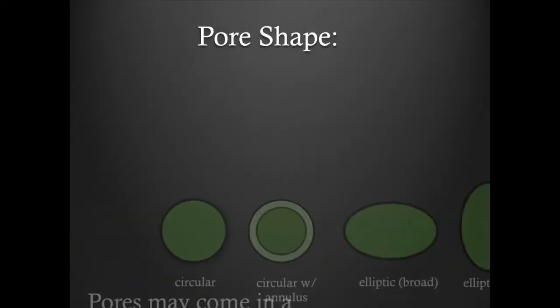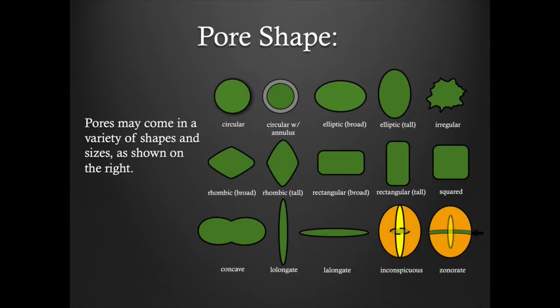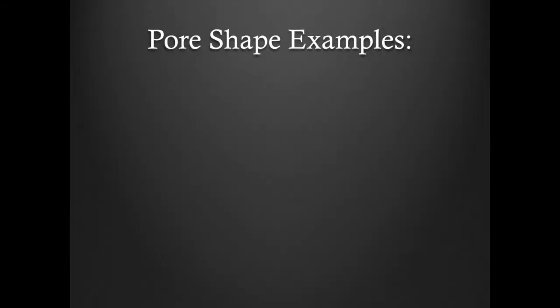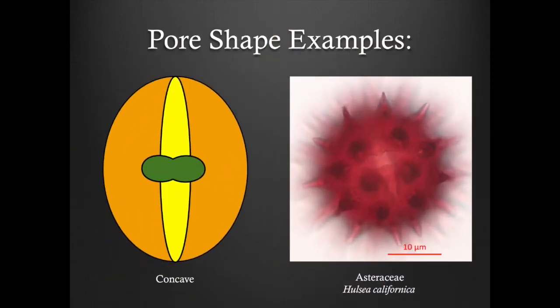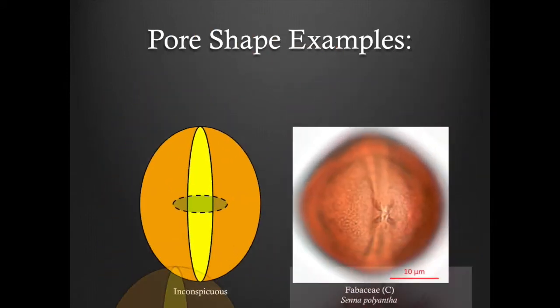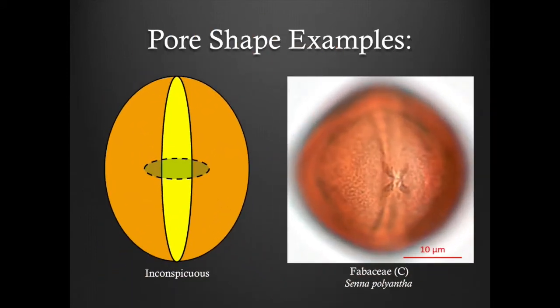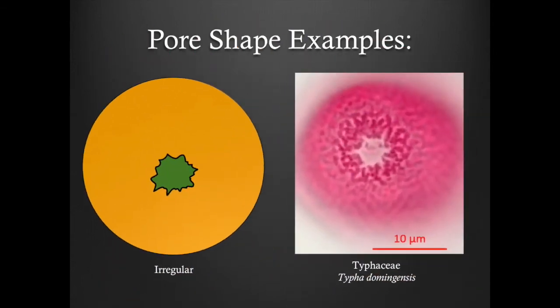Pore shape. Pores may come in a variety of shapes and sizes, making it a helpful morphological tool for pollen identification. The shapes generally range from circular or squared to elliptic or rectangular, or the pores can even be irregularly shaped or inconspicuous. Here are some examples of pore shape: a circular pore with an annulus, a concave pore, an inconspicuous pore, and an irregular pore.